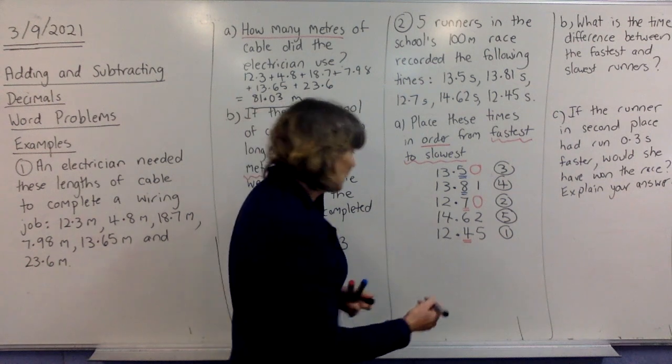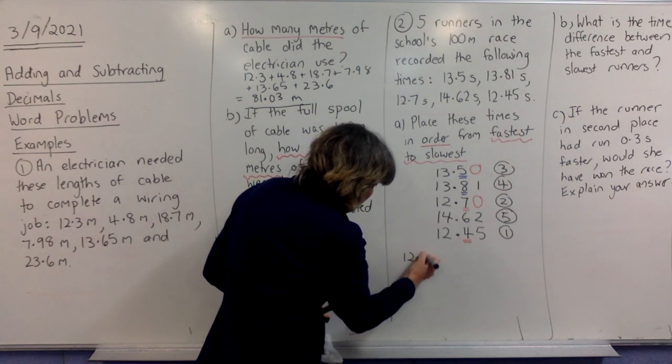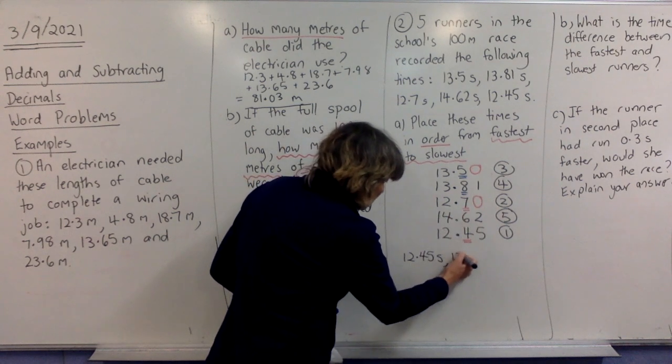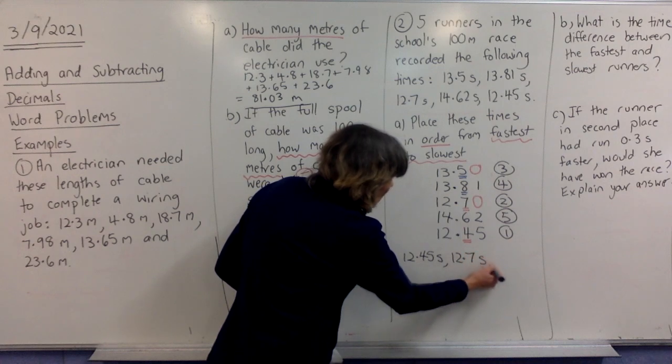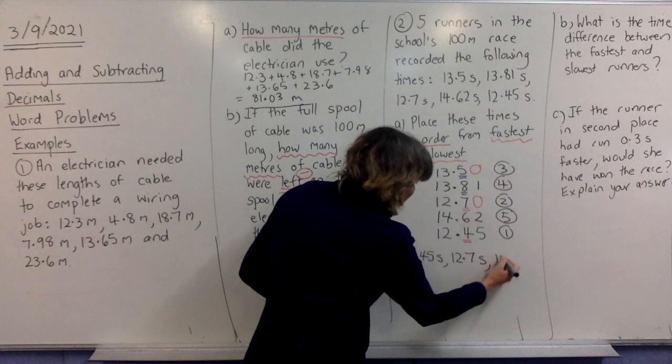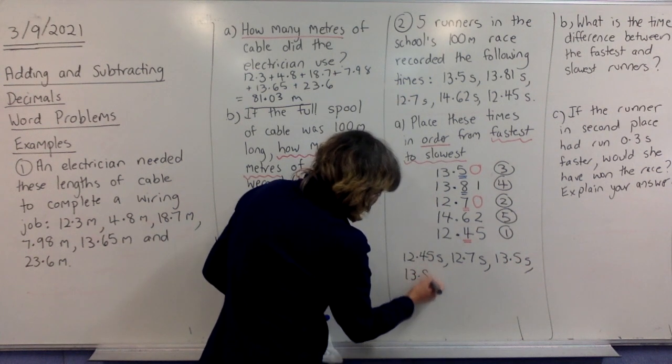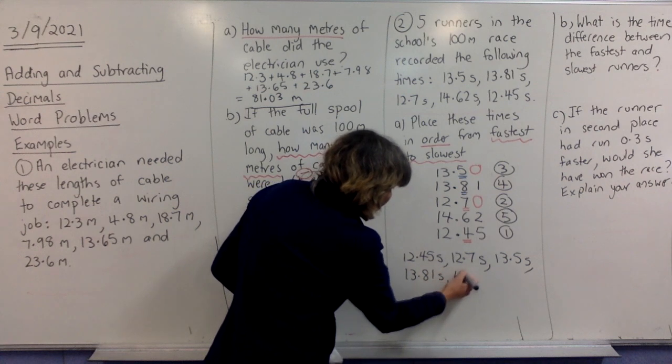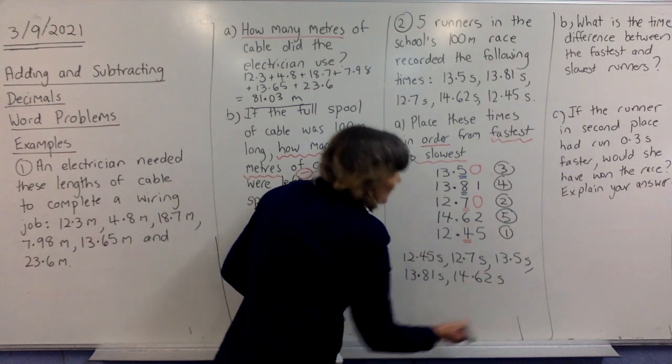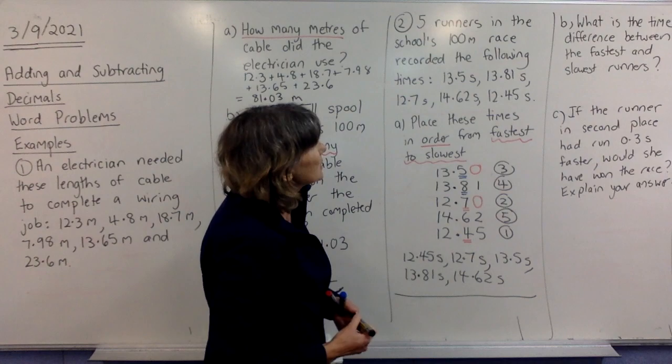Okay, so you need to then write them down in order. So, I'm going to write them down. Number one first. Put S for seconds after it. Number two was this one. We don't need to put the zeros on now. The red zeros can stay off. Next one, 13.5. Number four was 13.81. And number five was 14.62. Okay, and that's the end of the question. They're all in order. Fastest to slowest.